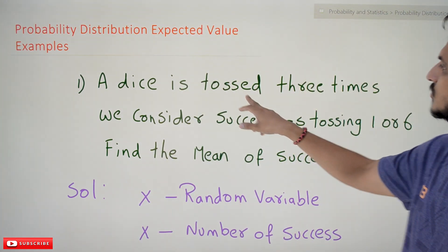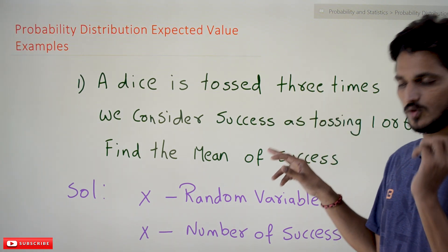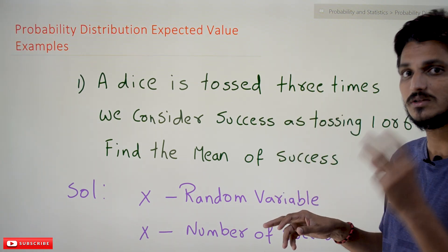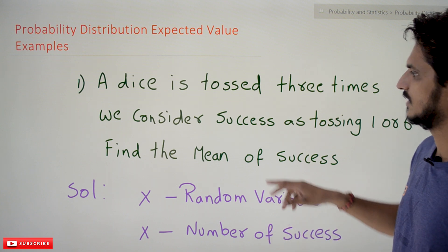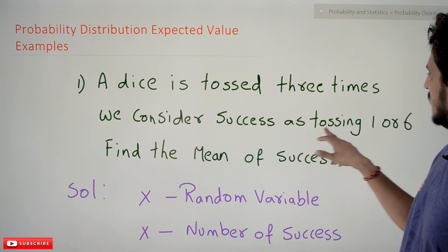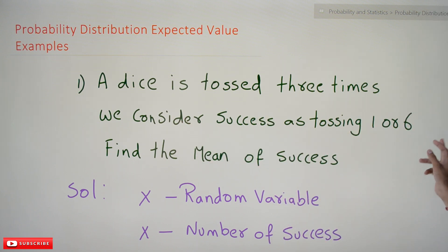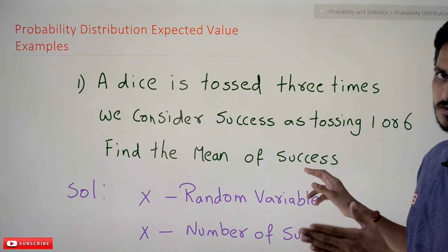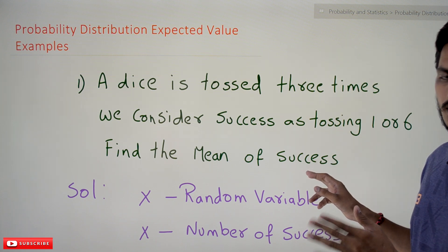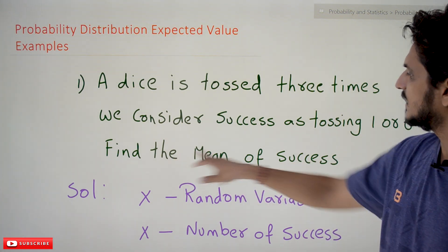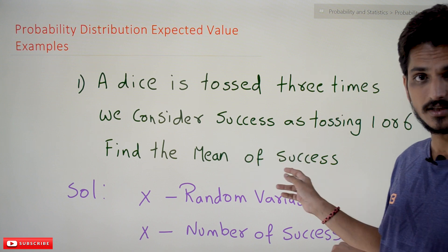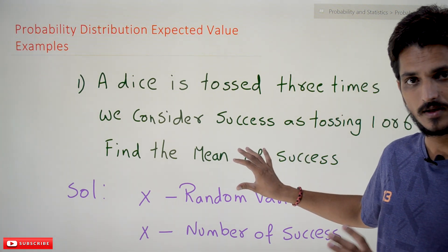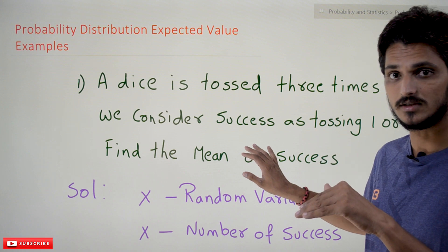Coming to today's class, our first example: a dice is tossed three times. We toss a dice and we are doing that experiment three times. We consider success as tossing one or six — if you toss one or six it is a success, remaining is failure. Find the mean of the success.